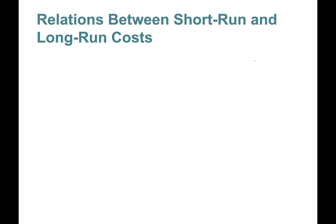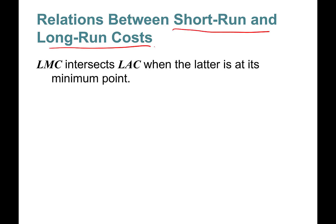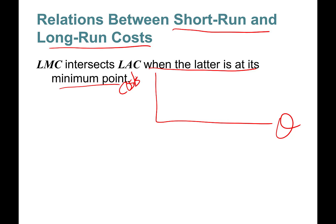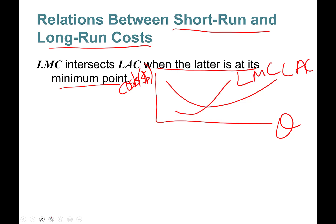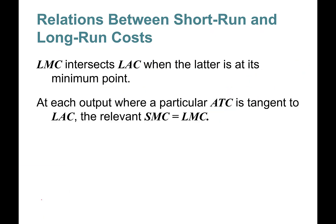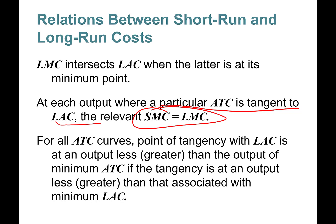Welcome back — this is Chapter 9, Part 7, covering short-run and long-run costs. The long-run marginal cost curve intersects the long-run average cost curve at its minimum point. I'll draw this out: long-run average cost, long-run marginal cost. At each output level where a particular average total cost curve is tangent to the long-run average cost curve, the short-run marginal cost equals the long-run marginal cost.